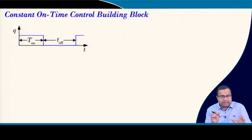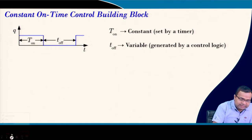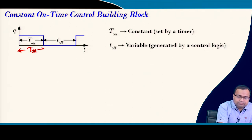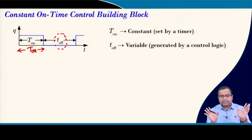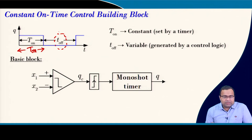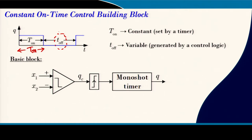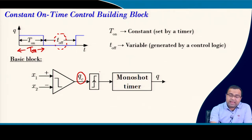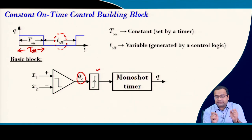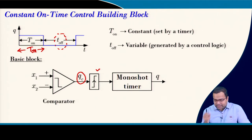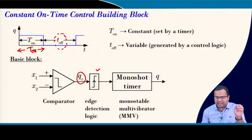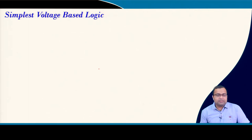For constant on-time, if we take the gate signal Q, instead of duty ratio we take this on-time — this on-time is constant — and the smaller time indicates the off-time, which will be adjusted from the feedback loop. As a building block, two signals x1 and x2 are compared; the comparator output Qc's positive edge is detected, then goes to a monoshot timer, which gives us the actual gate signal. This requires an edge detection circuit and a monostable multivibrator — the simplest voltage-based logic.